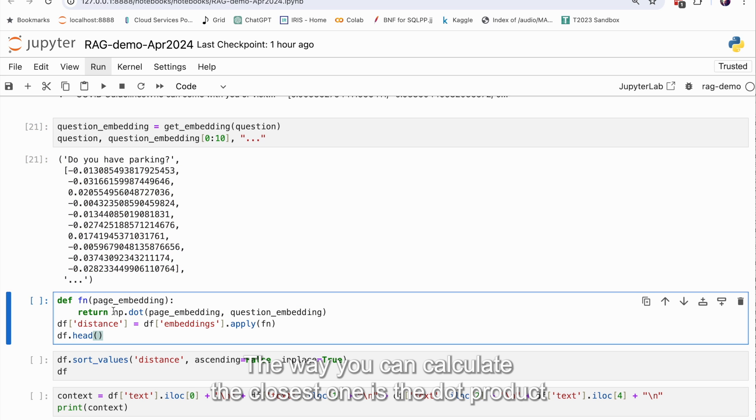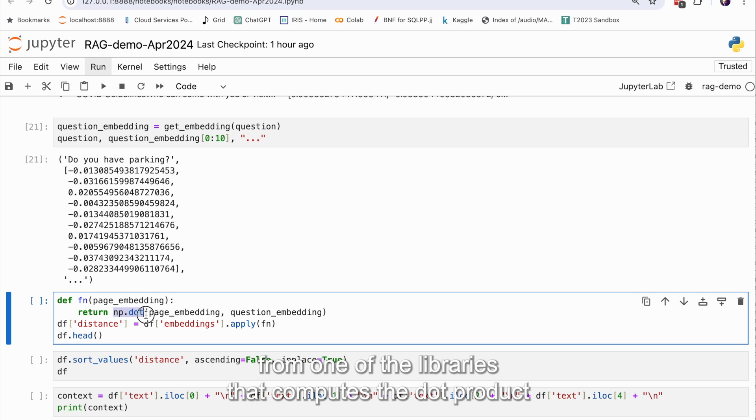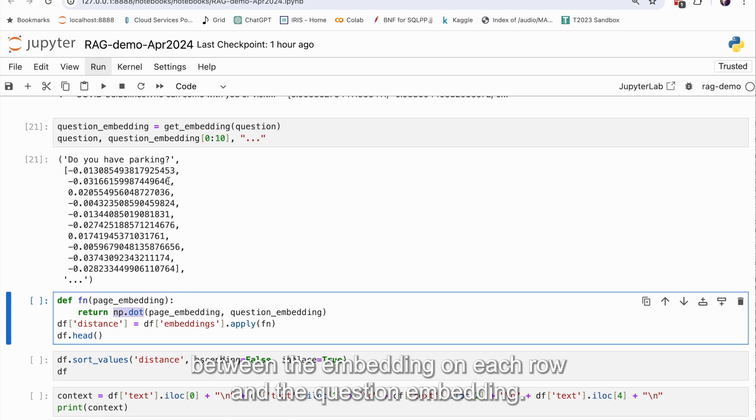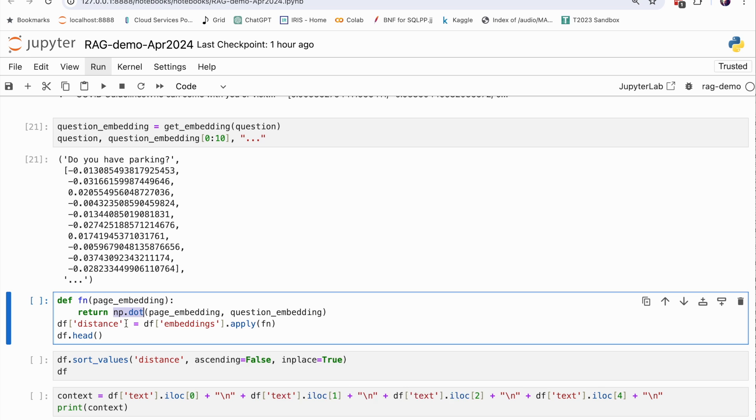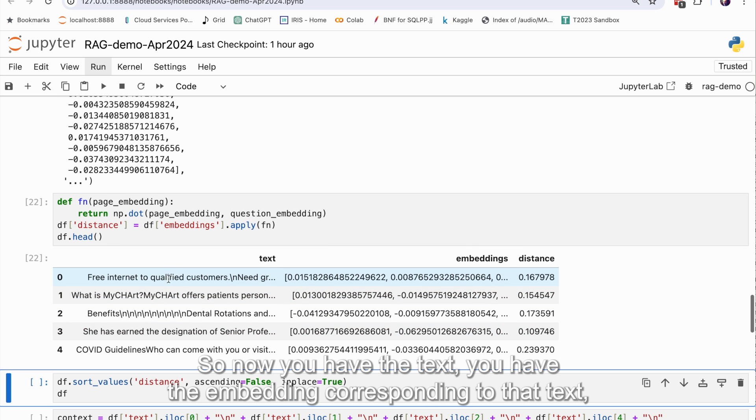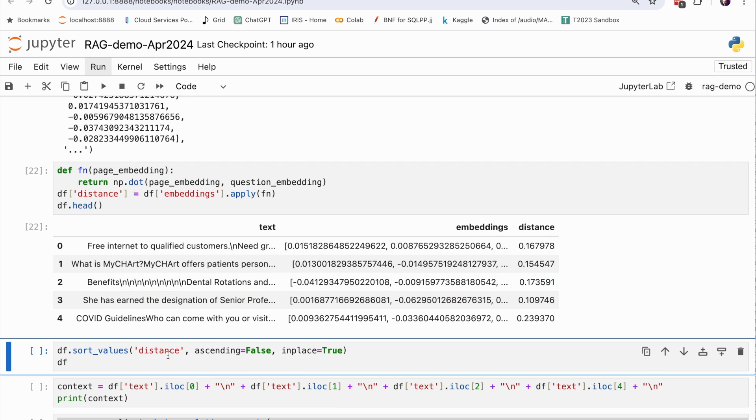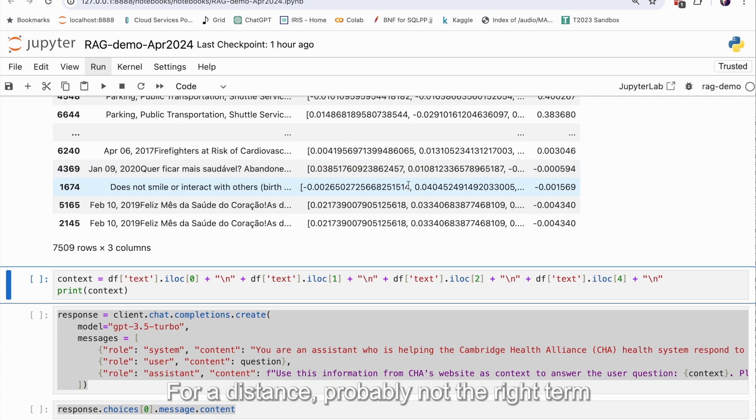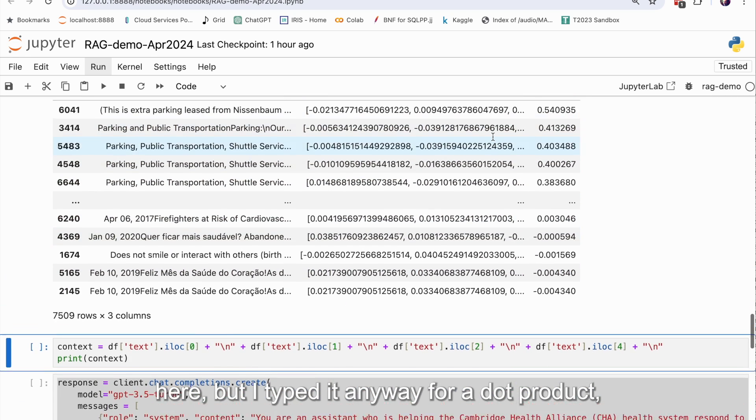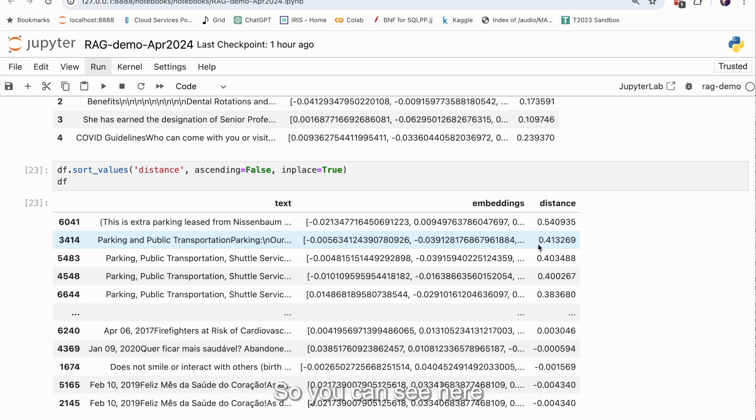The way you can calculate the closest one is the dot product of those two vectors. Basically, and this is a little function from one of the libraries that computes the dot product between the embedding on each row and the question embedding and then adds that as a distance column into the data frame. It's called this little database. So now you have the text, you have the embedding corresponding to that text, and then you have a distance from this embedding to the question embedding. And for dot product, which is a version of the distance formula, you want the largest value. The largest value is the closest.